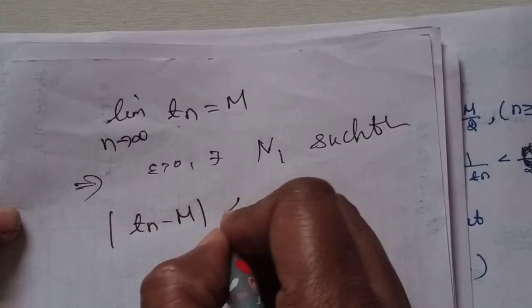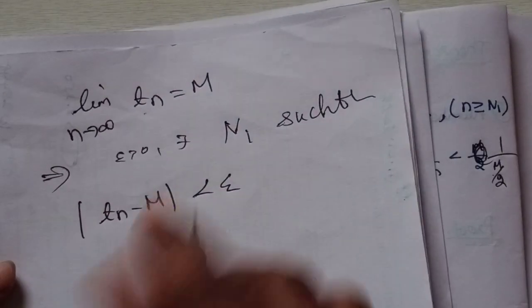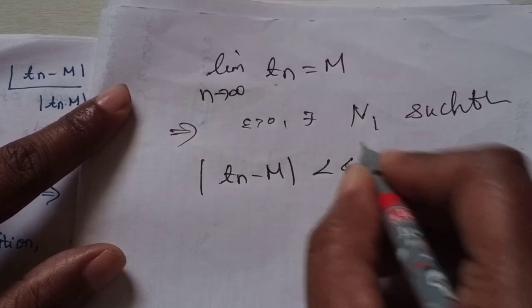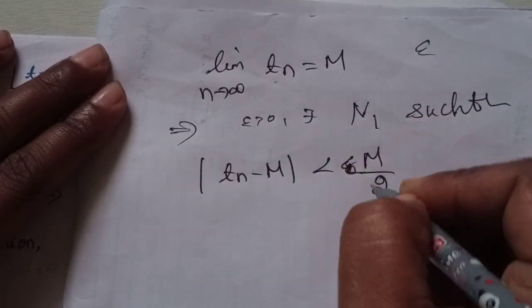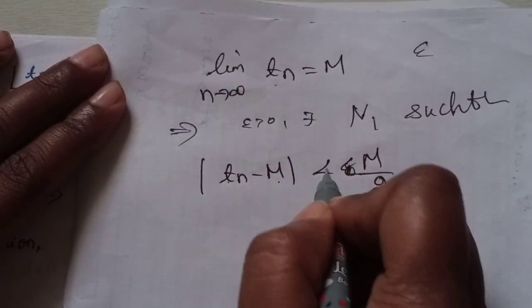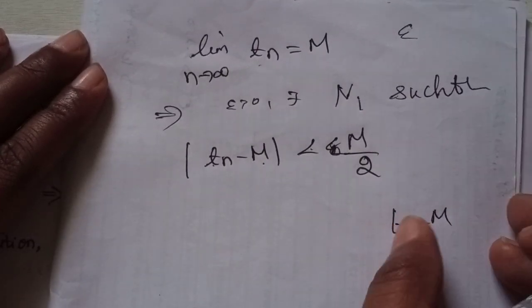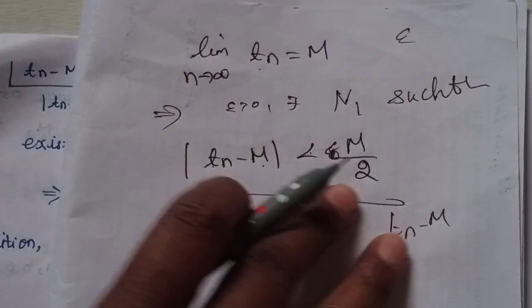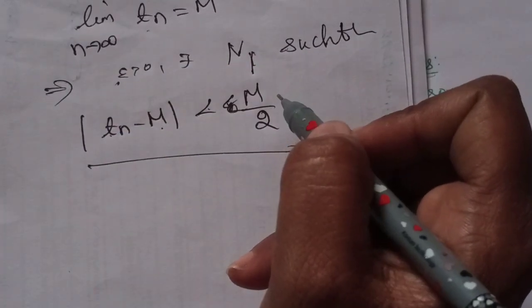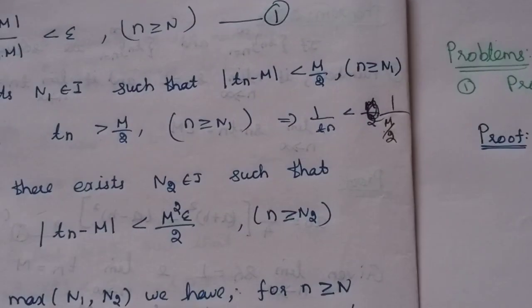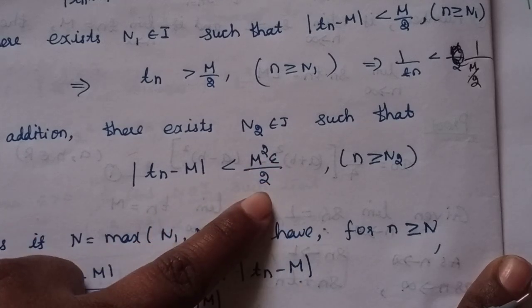We need modulus of tn minus m less than epsilon. We will choose epsilon such that tn minus m is less than m by 2. This condition exists, and we change epsilon accordingly: modulus of tn minus m less than m squared epsilon by 2.